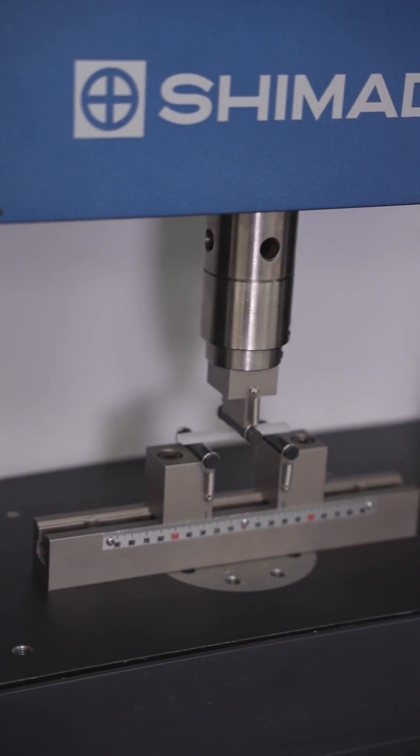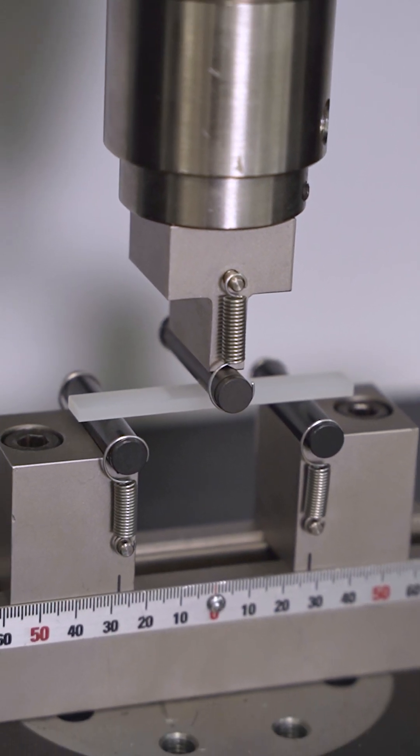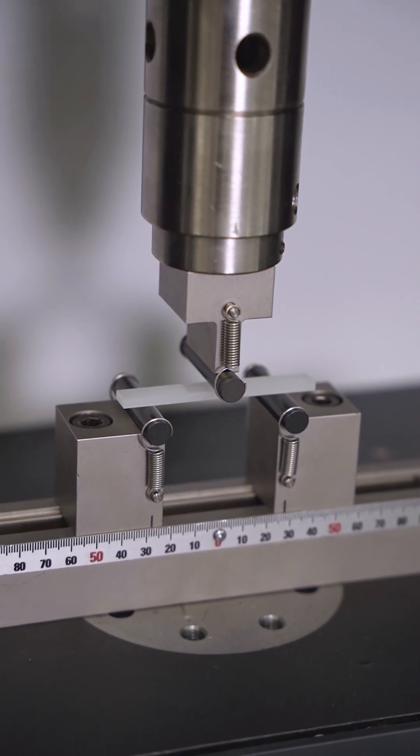The standard can be performed on any of Shimadzu's universal test machines with an appropriate load cell and three-point bending jig, typically with a five millimeter radius punch and supports.